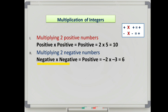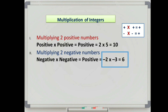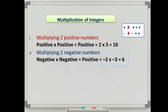For example, minus 2 multiplied by minus 3: in this case both are negative numbers, so we write the sign as positive and the multiplication of 2 and 3 is 6, giving an answer of positive 6.